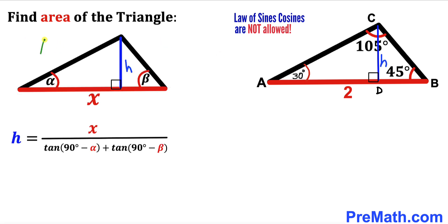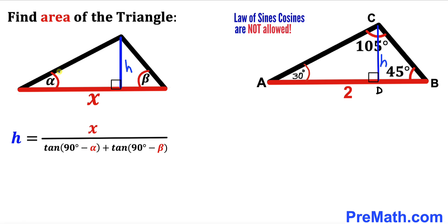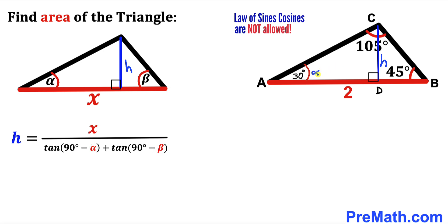Let's focus on a general triangle where the base is x, the height is h, and the angles at the base are alpha and beta. We can find the height h using the formula: h equals x divided by the quantity tangent of (90° − alpha) plus tangent of (90° − beta). We label our angles accordingly — alpha and beta — and our base x.